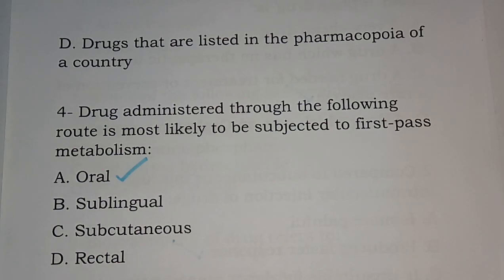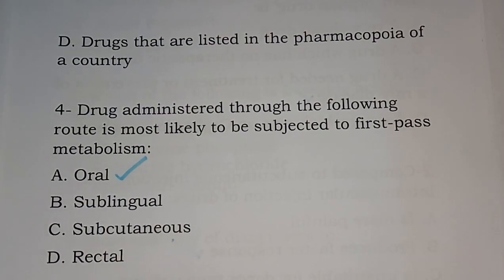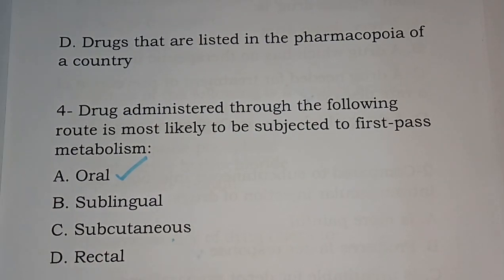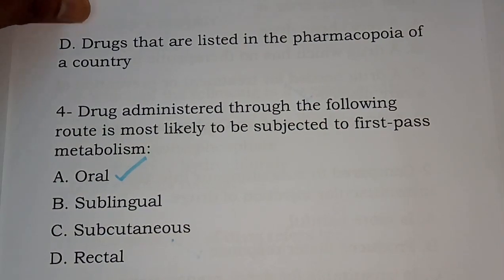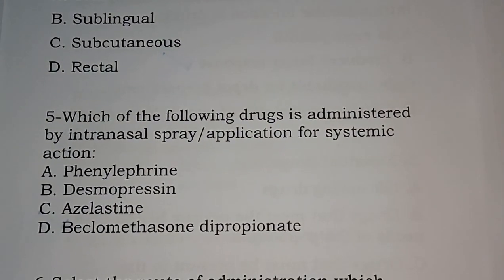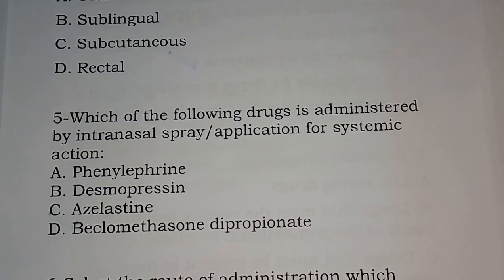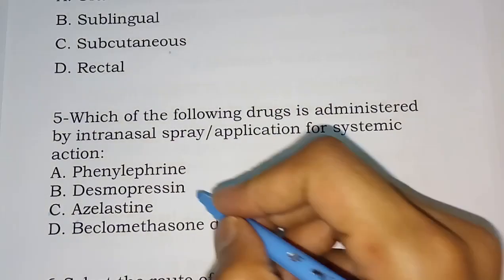In the case of the rectal route, 50% of the drug absorbed through the external hemorrhoid vein undergoes first-pass metabolism, but through the internal hemorrhoid vein there is no first-pass metabolism. Question number five: which of the following drugs is administered by intranasal spray or application for systemic action? Options are: phenylephrine, desmopressin, azelastine, beclomethasone. The correct answer is option B — desmopressin.